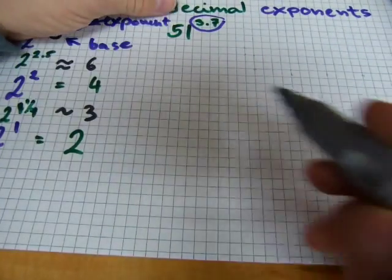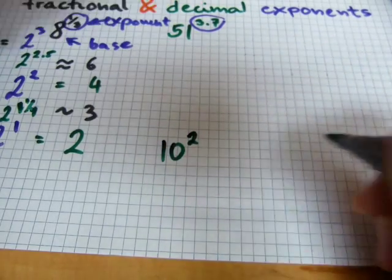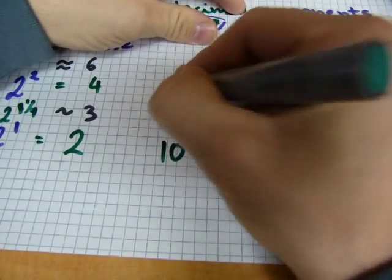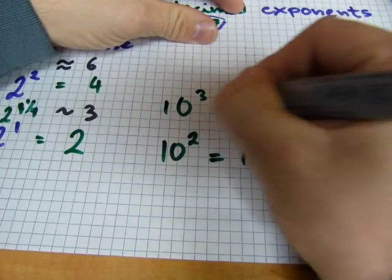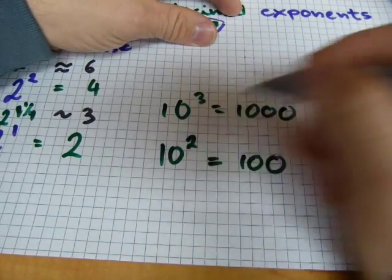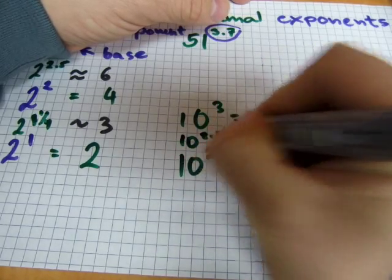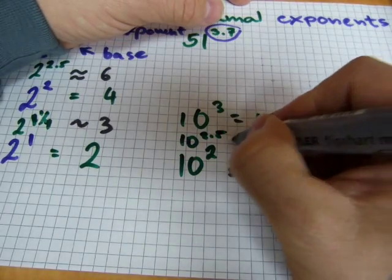I'm going to do this with the powers of 10 here. 10 to the power of 2 is 100, and 10 to the power of 3 is 1000. 10 to the power of 2.5, which is halfway between here. Now, I almost run out of room. 10 to the power of 2.5.